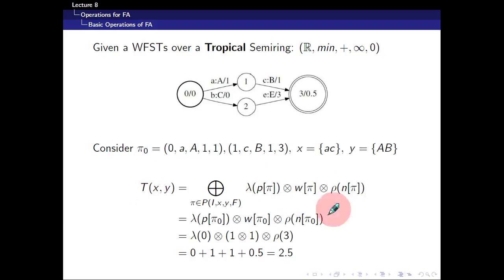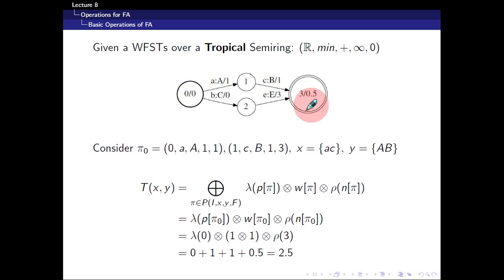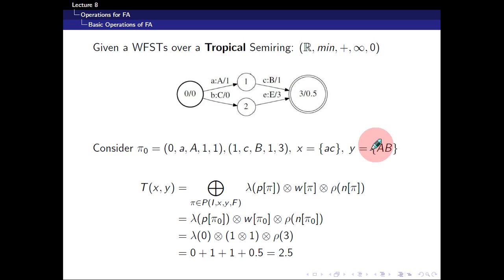I'll explain this further using some examples. Suppose we're given a single path from 0 to 1 to 2 to 3. Formally, we have: state 0, input 'a', output 'A', weight 1 — capturing the first transition — and then state 1, input 'c', output 'B', to state 3. So you start from 0, end at 3. The input would be 'ac' and the output would be 'AB'.